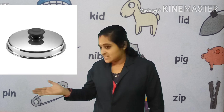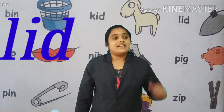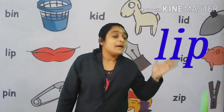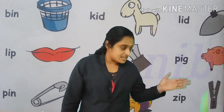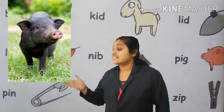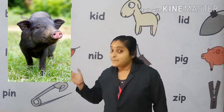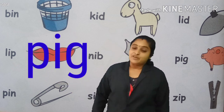Next, what is this? Lid. L-I-D. Very good. Next, what is this? Lip. L-I-P. Lip. Next, what is this? Nib. N-I-B. Very good. This is a pig. P-I-G. Very good.